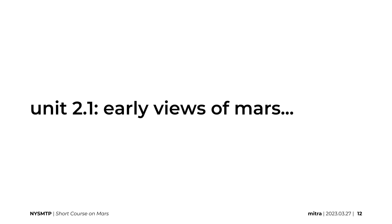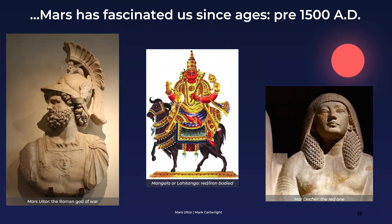Let's understand the early views of Mars — what we thought about it to begin with. Mars has fascinated us through the ages. As early as 5,000 BC, people saw a red dot in the sky and were scared of it. They named it the god of war, and different cultures all had a negative bias toward Mars. The red color was associated with danger and was considered a bad omen across cultures.